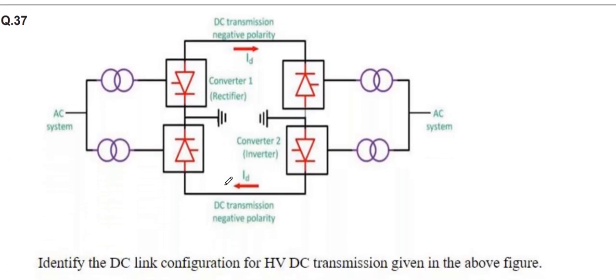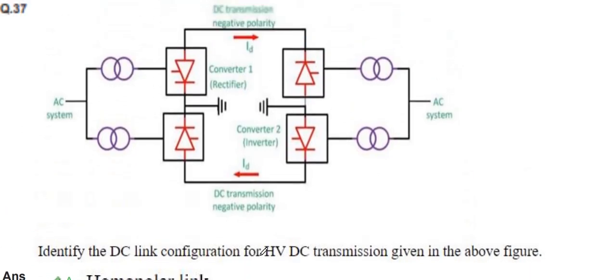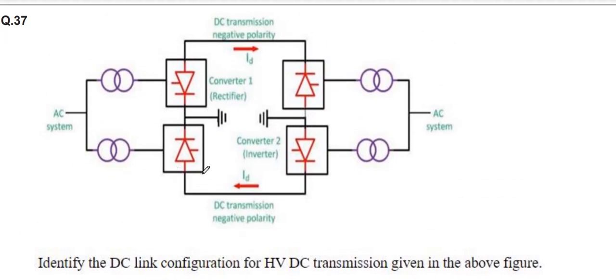You have to identify which type of given DC link configuration is shown. Converter 1 and Converter 2 are connected on both end sides. This is called a homopolar link because if one section gets damaged or disturbed, power can be supplied from the other end.